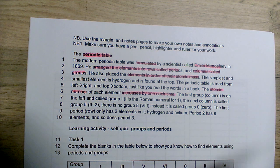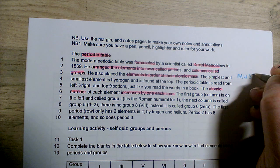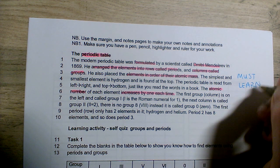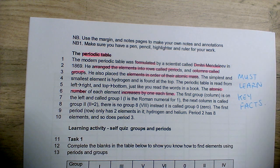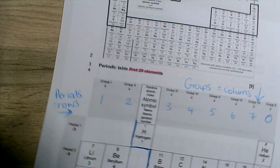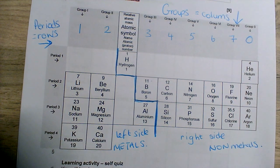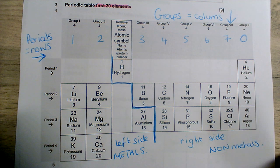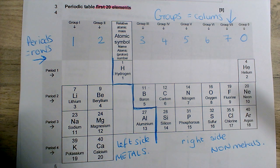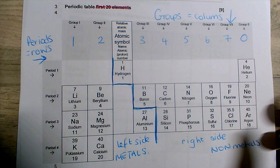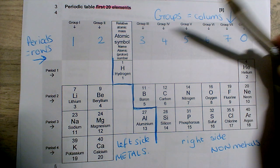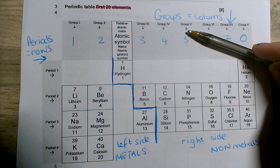These are must-learn key facts. Let's look at our periodic table and do some practice. Questions that can be asked include: name the element in a certain group and period. For example, name the element in group 5, period 2. The easiest way is to read down the group — find group 5, read down to period 2.